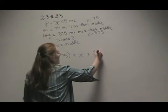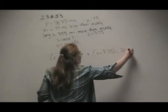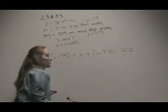our middle, plus x plus 375, our longest, has to equal the total perimeter, 3,075.